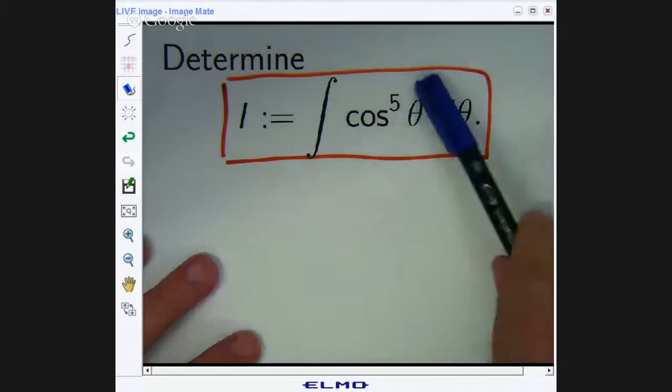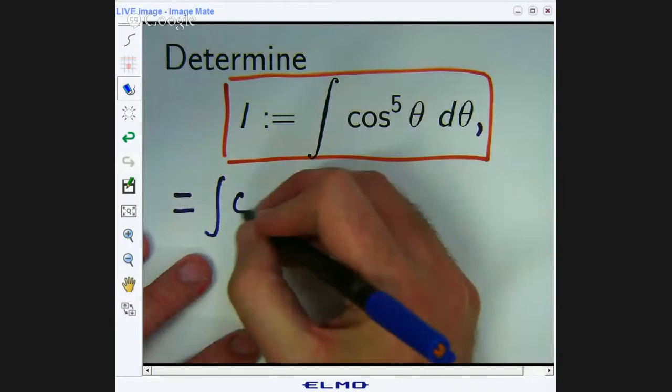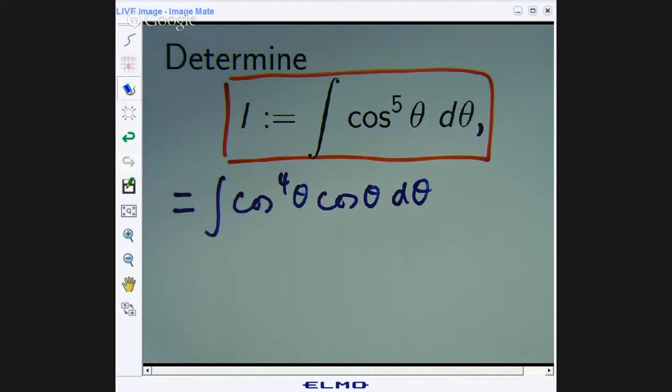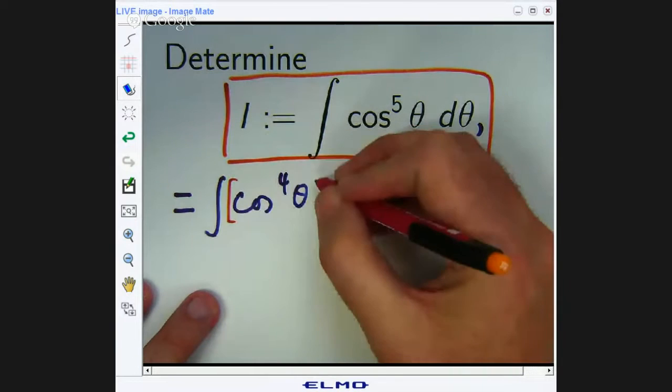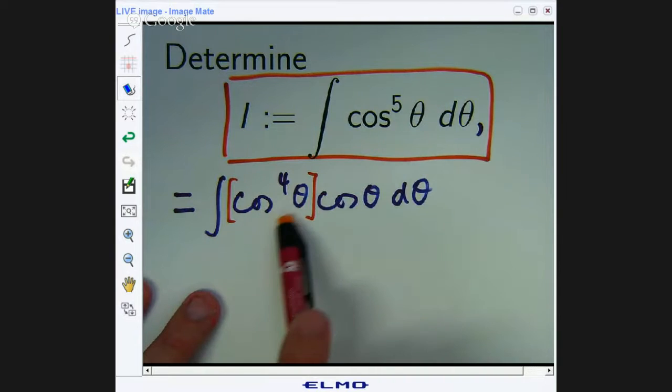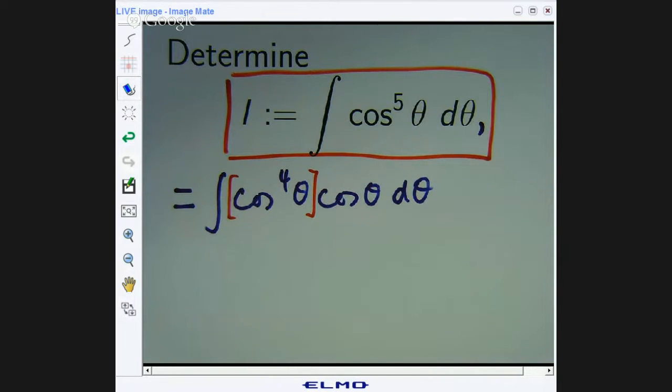What I'm going to do is make a strategic choice here in breaking it up into a special product. So let me show you how that works. So I'm going to take one of the powers out into the right-hand side. Now what I'm going to do with the remaining part, and you'll see we now have an even power.